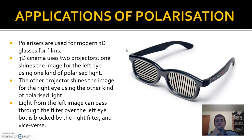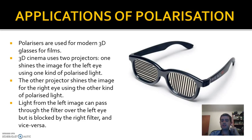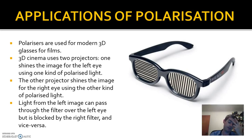Modern 3D glasses — not the old red and blue lens type — use polarization to produce 3D images. In a 3D film you have two projectors: one for the left eye and one for the right, each using a different kind of polarized light. The polarized light intended for the left eye can pass through the left lens of your 3D glasses but not the right, and vice versa. This is how the two images are separated, and it's a lot better than watching a red and blue film like the old 3D days.